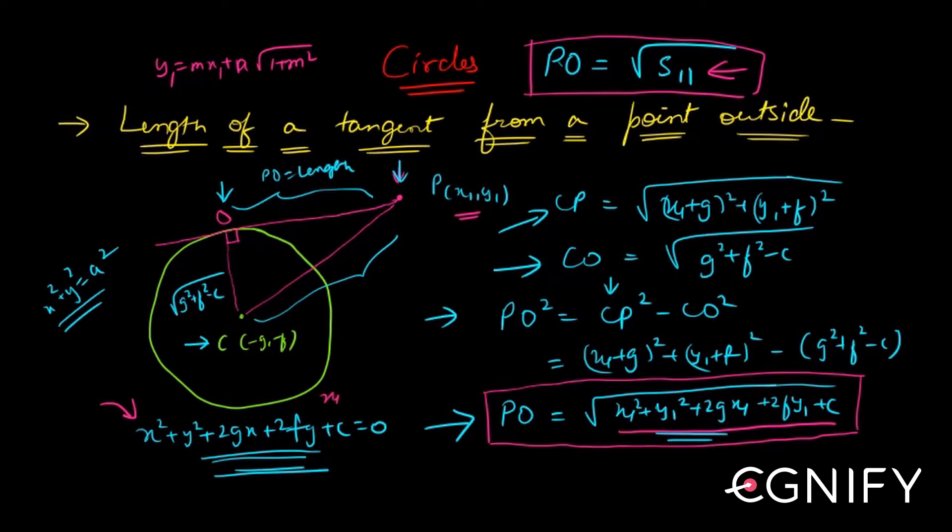It simply means you pick up the point and you put it in the curve's equation. So I pick up the point x1 y1 and I put it in the curve's equation: x1 square plus y1 square plus 2gx1 plus 2fy1 plus c. And that's what this is, right?